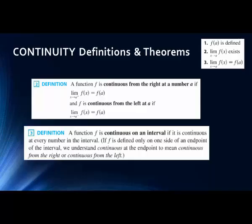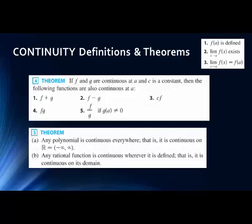We say a function is continuous on an interval if it is continuous at every number in the interval. If we're talking about endpoints, we look at the values they're coming from — if our endpoint is at the far right, we say it's continuous from the left. If there's a hole or a jump anywhere in the interval, then it's not continuous on that interval.